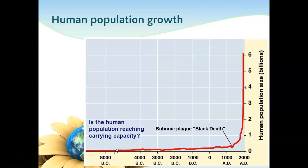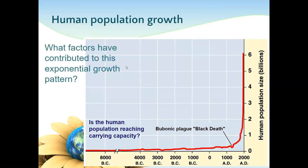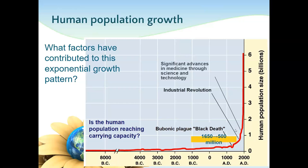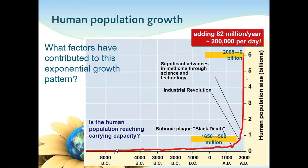Human population growth rates — we can see increasing, increasing, increasing. It would be interesting to compare this now because our numbers are changing quite a bit in the last year. Do you think maybe we've reached our own carrying capacity? The environment has a way of bringing numbers back into stability. We were growing exponentially. We had the Black Plague that decreased our numbers. The Industrial Revolution is where we start seeing a large increase — medicine increasing life expectancy, technology. We reached 6 billion in 2005. We're currently adding 82 million per year — that's 200,000 per day.